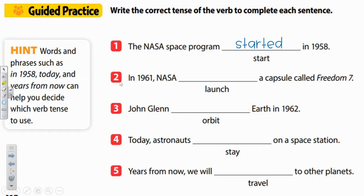Number two: in 1961, just a few years later — that's still in the past — NASA blank a capsule called Freedom 7. Our verb this time is launch. If they already did it in the past, that verb becomes launched, with the -ed ending again.